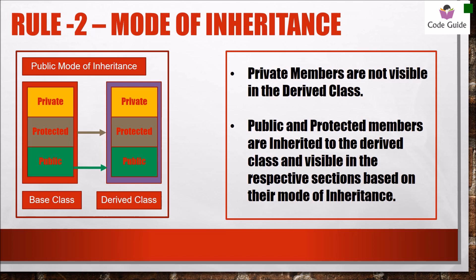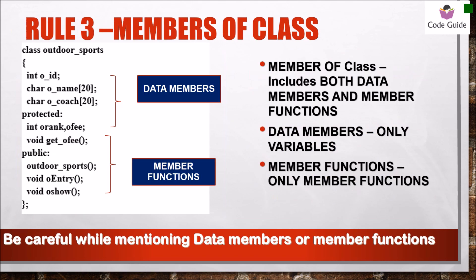Private members are inherited but they are not visible in the derived class, hence they are not accessible by the member functions of the derived class. Rule number three says: if the question asks to write 'members', you have to write both data members and member functions. If only 'data member' is asked, write only variable names. If only 'member function' is asked, write only member functions — writing the wrong type will get you zero marks.